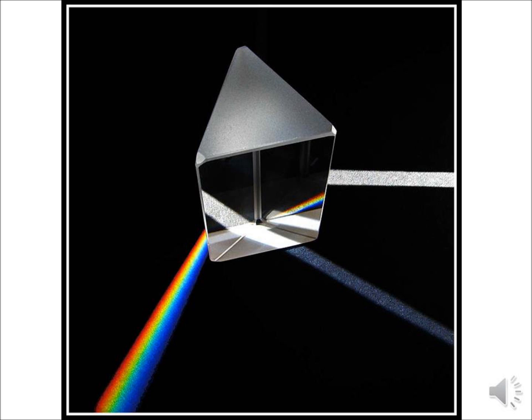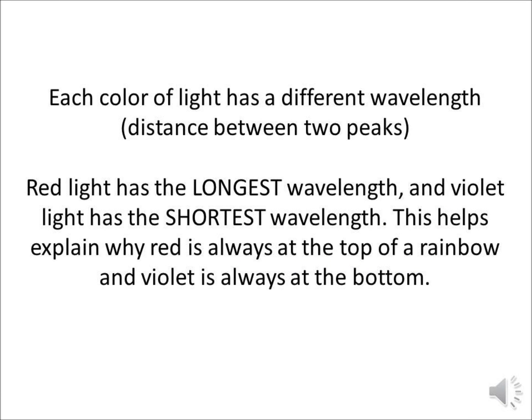Here's a picture of a real life prism, where you have the light coming in from the right, bouncing around inside the prism, and a rainbow comes out the other side. The reason we have different colors is because each color has its own unique wavelength — the distance between two peaks. Red light has the longest wavelength; it's the farthest apart, the lowest energy, the slowest moving. Violet light has the shortest wavelength; it's moving quickly and has a lot of energy. This explains why red is always at the top of the rainbow and violet is always at the bottom — because red light is so long, it's not able to bend as much as the violet light.